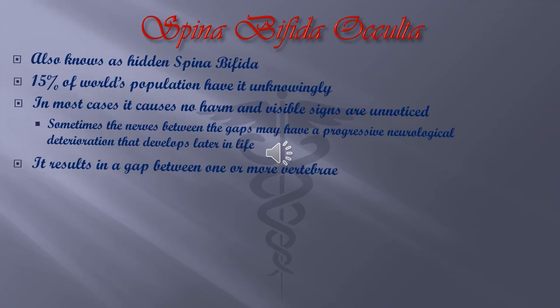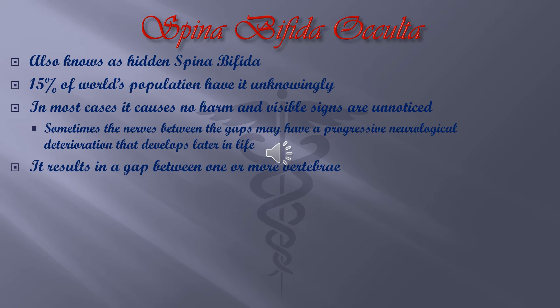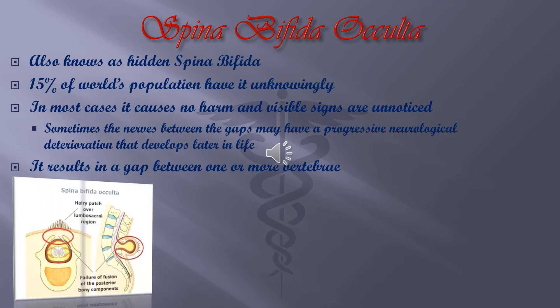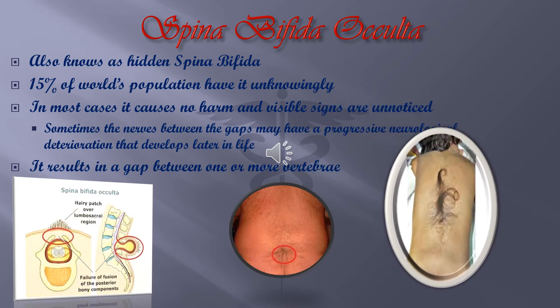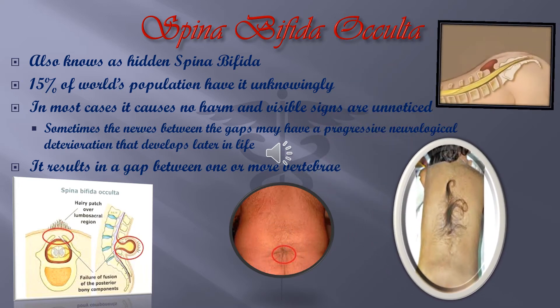Spina Bifida Occulta, also known as Hidden Spina Bifida, is a gap between one or more vertebrae. In most cases it causes no harm and visible signs are unnoticed. Sometimes the nerves between the gaps may have a progressive neurological deterioration that develops later in life. 50% of the world's population have it unknowingly.